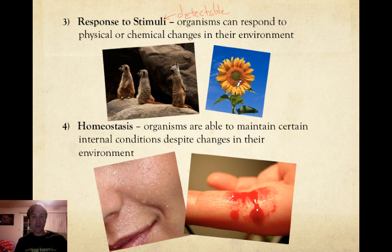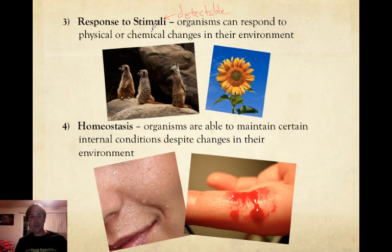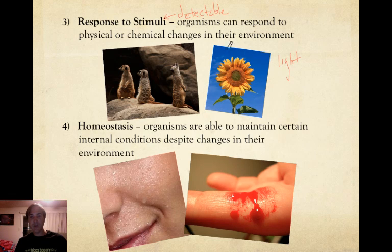Our second example is the sunflower. Sunflowers have the ability to detect sunlight. This flower will basically face the sun throughout the day. As the sun comes up, the flower will actually turn to face the sun, absorbing that light and making its food. As the sun goes across the sky, the face of this flower will follow the sun. So the stimulus in the case of the sunflower is light, and that light triggers a response — the flower follows the light across the sky.